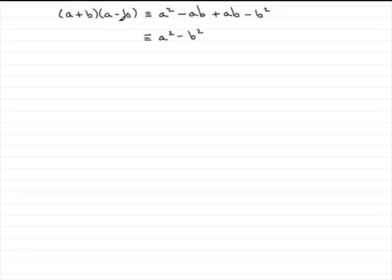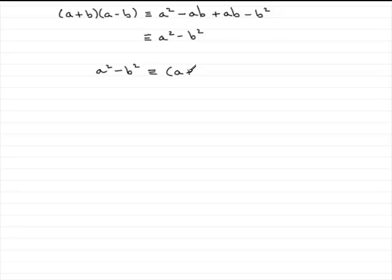Now whether you multiplied out a plus b with a minus b, or a minus b times a plus b, you'd always get this result, a squared minus b squared. So what does this mean? Basically, it's saying that if we reverse the process, if we've got a squared minus b squared, then this comes from a plus b multiplied by a minus b — or a minus b times a plus b. It doesn't matter which way around.